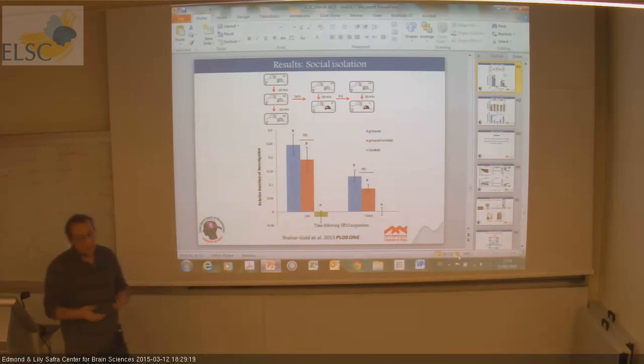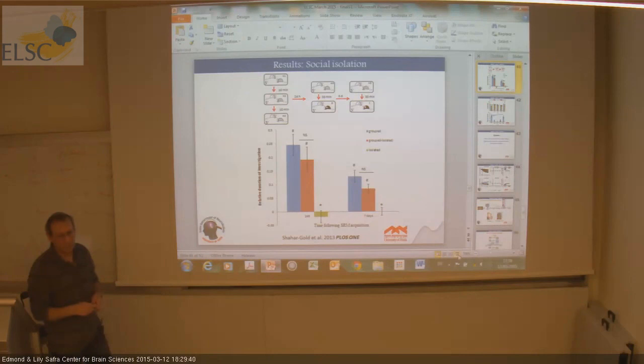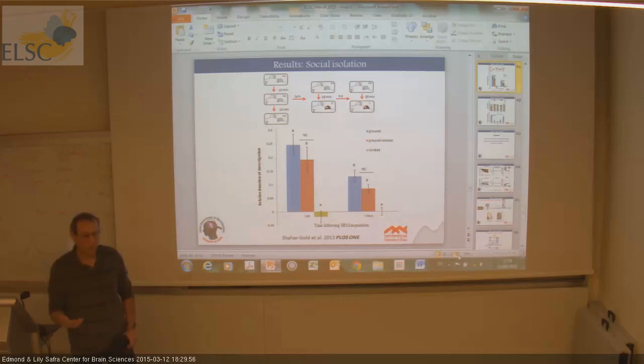One more question about the claustrum. The claustrum is a great thing — it actually collects information from so many brain areas. We know very little about it except that it is strongly activated during social interactions and is one of the areas in the brain that gets the densest innervation of oxytocin fibers. That's all I can tell you about it. Okay, thank you very much.